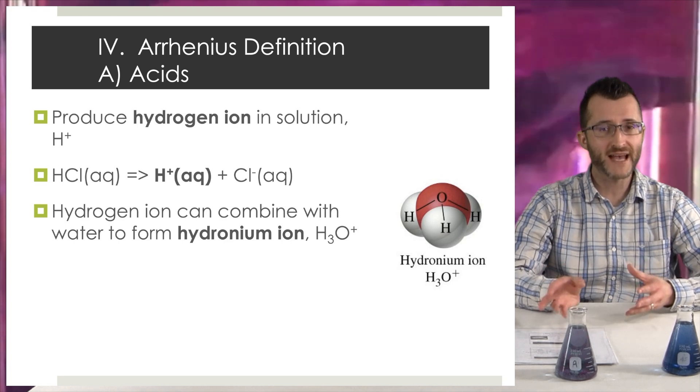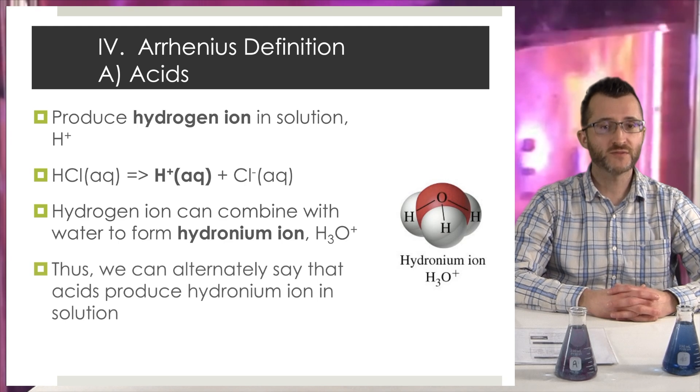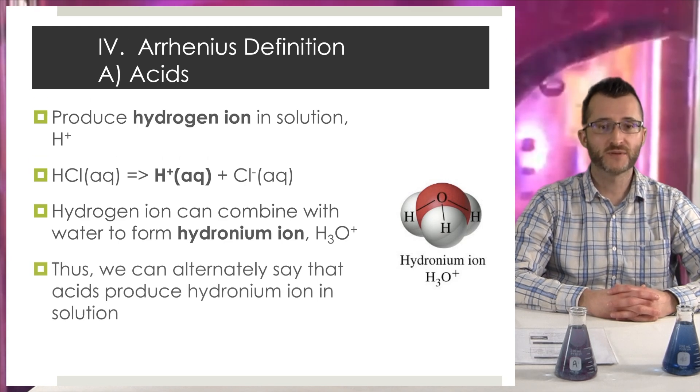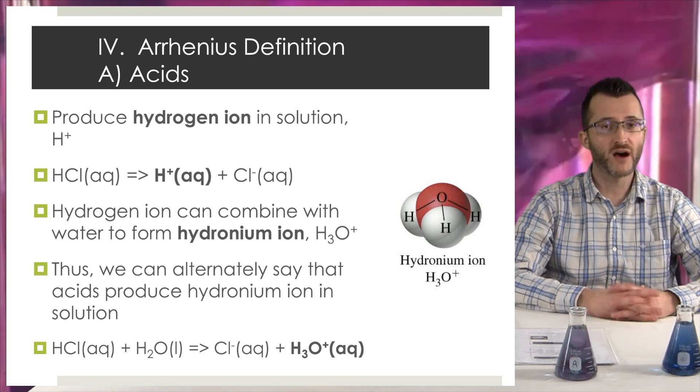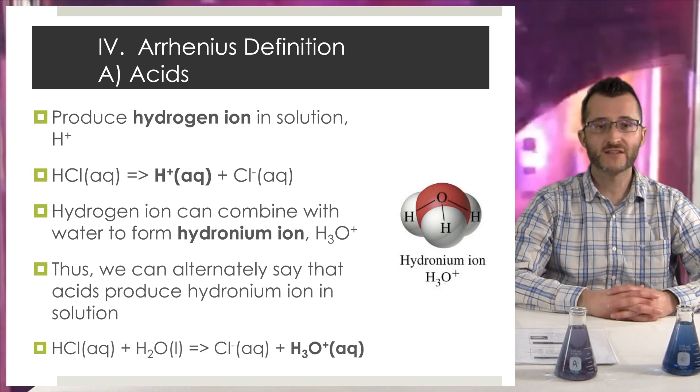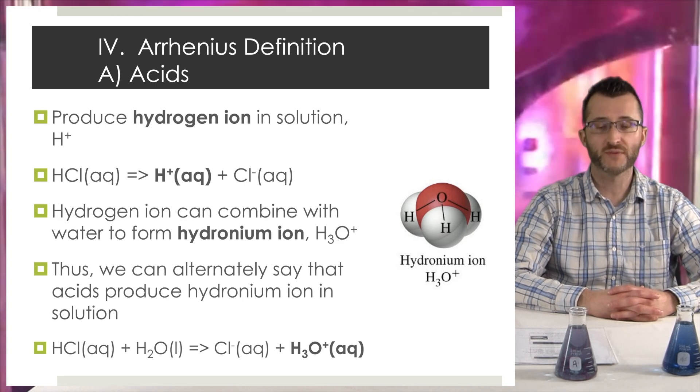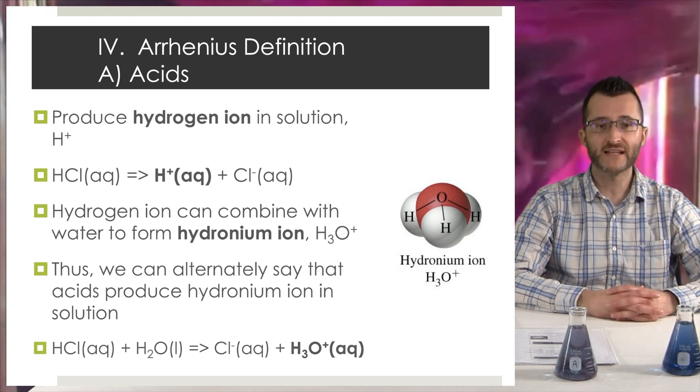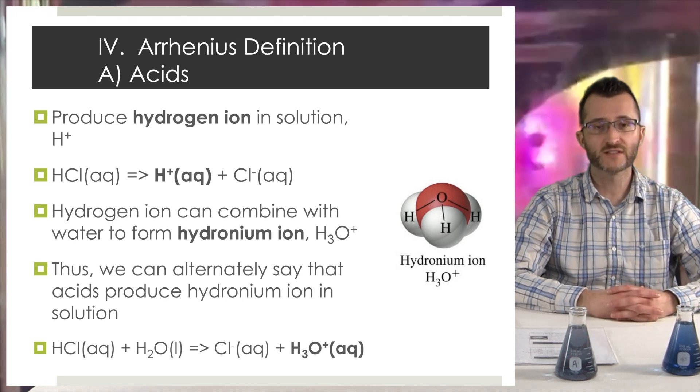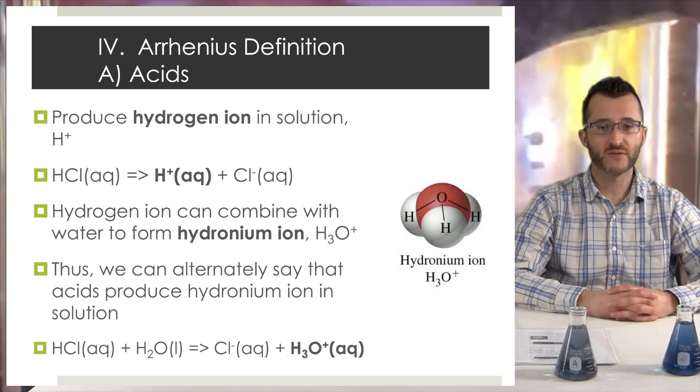Now don't mix hydronium up with hydroxide. Hydroxide indicates you have a base, whereas hydronium indicates that you have an acid. Thus we can alternately say that acids produce hydronium ion in solution. Now we can look at HCl in water a slightly different way. HCl aqueous plus H2O liquid yields Cl minus aqueous plus H3O plus aqueous. You can kind of imagine that the H plus from the HCl is being transferred over to the H2O to make the hydronium ion H3O plus aqueous.